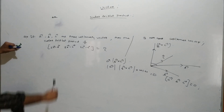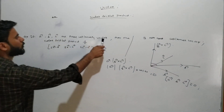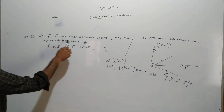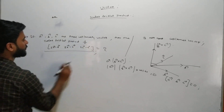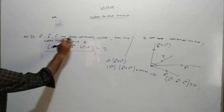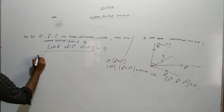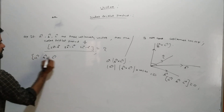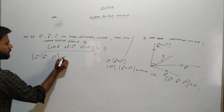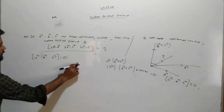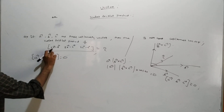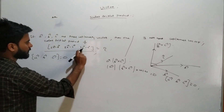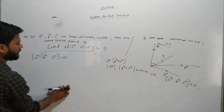The question states that A, B, C are three coplanar vectors. The box product given is of (2A minus B), (2B minus C), and (2C minus A).